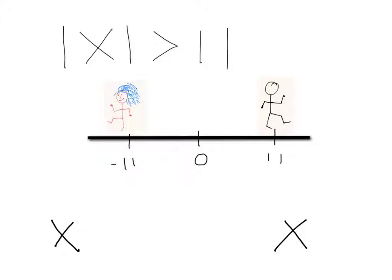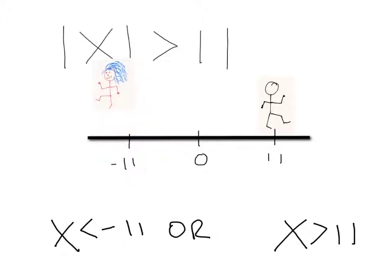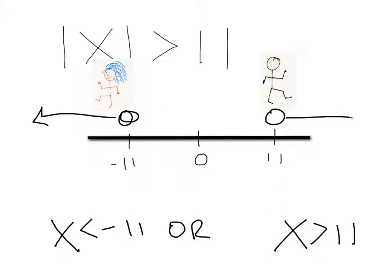Using variables, this would represent the inequality of x is less than negative 11, or x is greater than 11. And if we were to graph it, it would look like this.